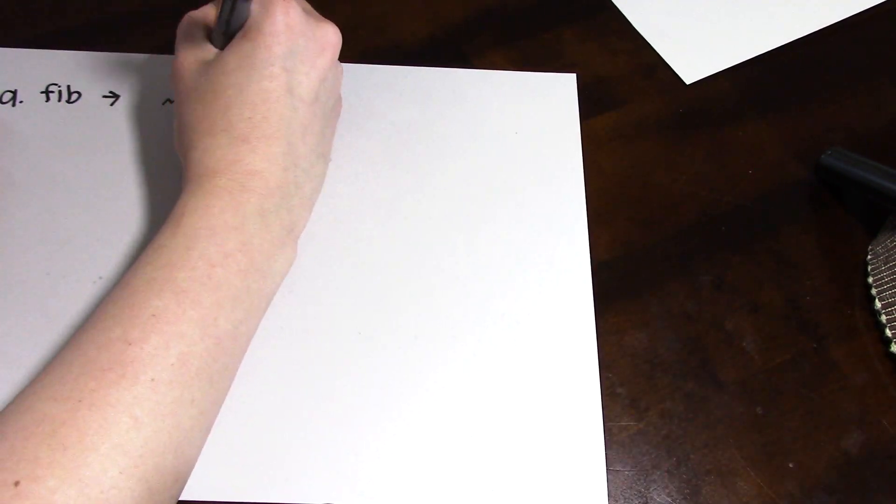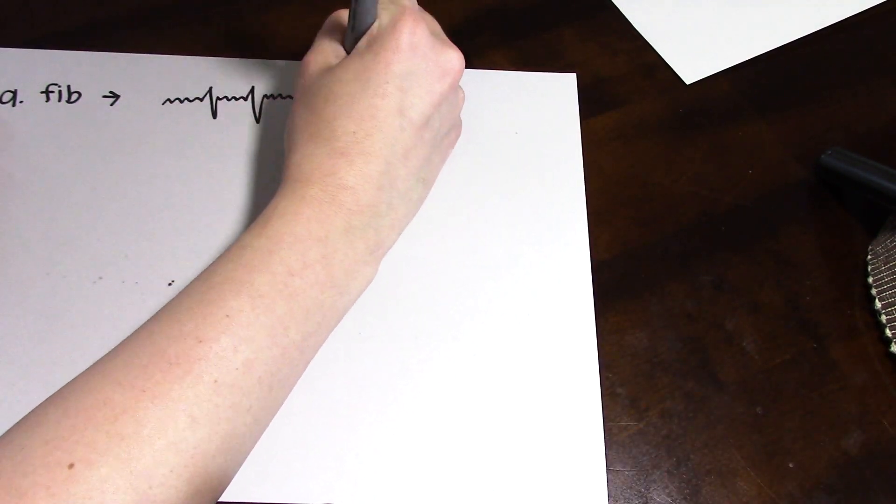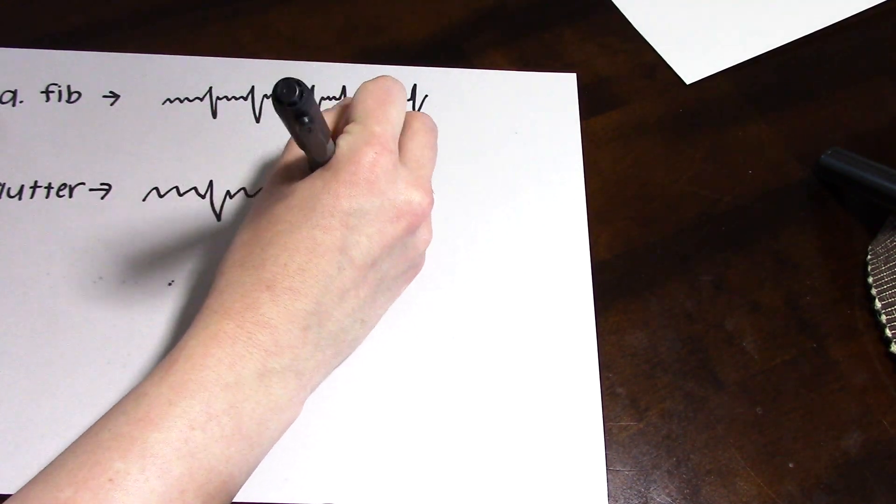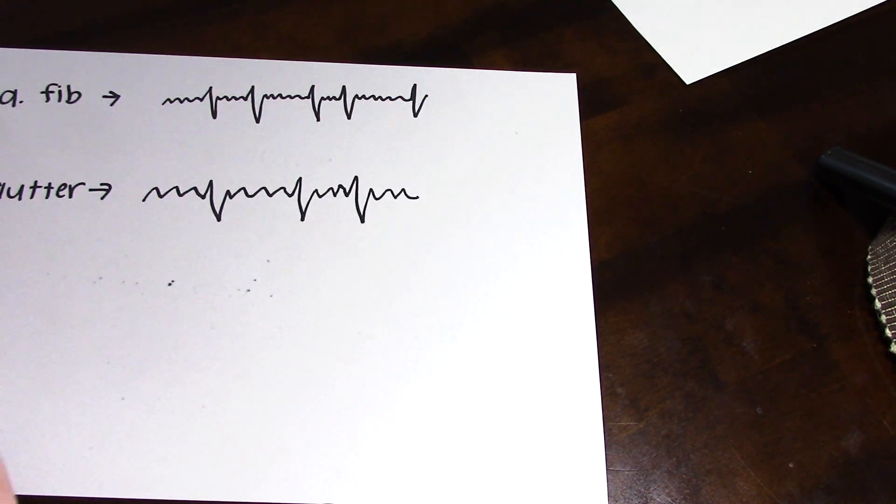So just a little comparison for you guys. In atrial fibrillation or afib, you have the fibrillatory P waves that look like a little squiggle line. And in aflutter, there are sawtooth P waves that look a little bit more sharp.